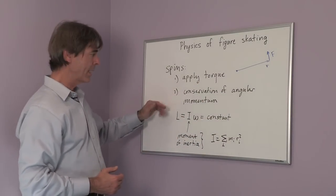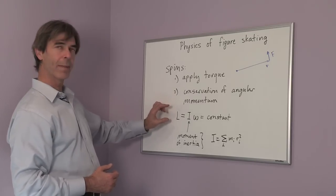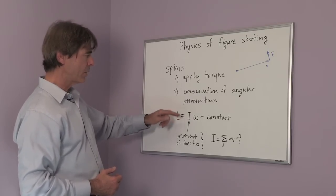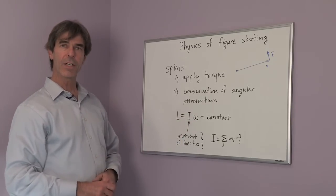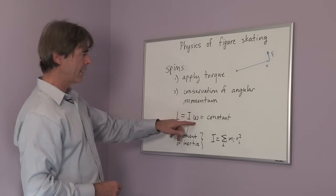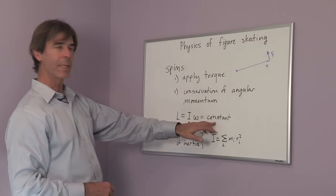Conservation of angular momentum can be written as angular momentum L, that's equal to something called the moment of inertia I times the angular frequency ω. This is the spin frequency, and conservation means that this should be a constant.